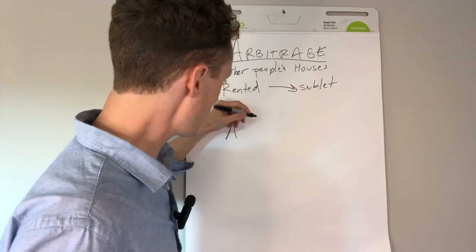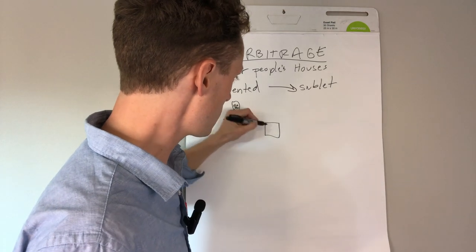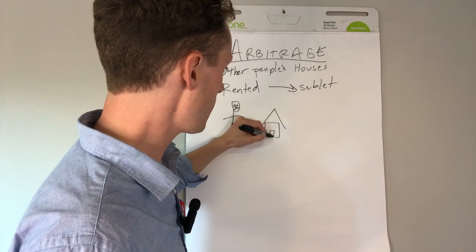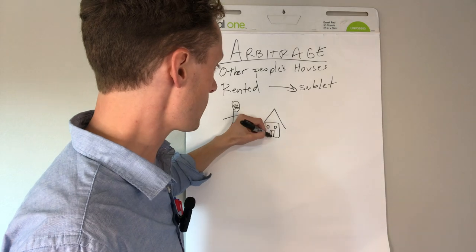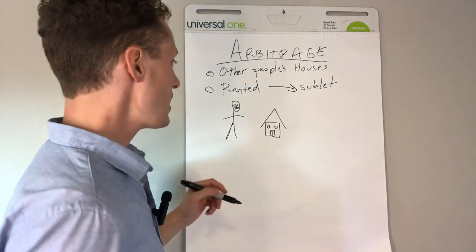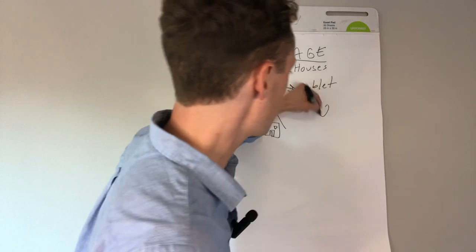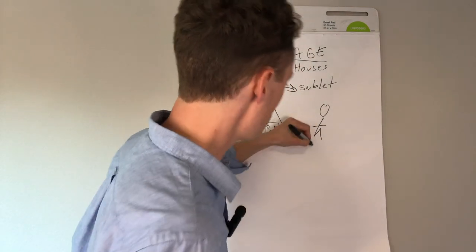He has a house. There we go. He has a house and he wants to rent it. And now here I am. Here's me. This is me.